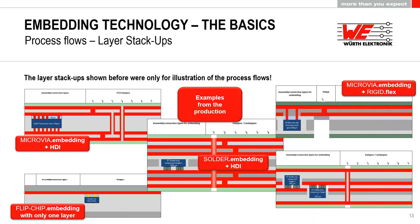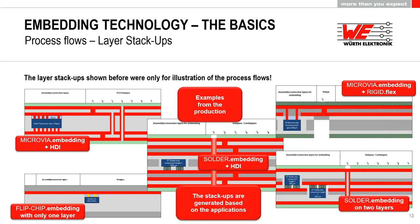Multiple inner layer cores assembled with components are possible, though this adds cost and should only be done when necessary. One current limitation is that inner layer cores can only be assembled on one side — double-sided assembly is not offered due to the difficulty of handling very thin cores during a two-sided assembly process. This is a single-sided constraint for inner layer cores at this time.